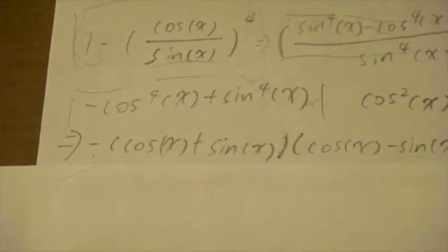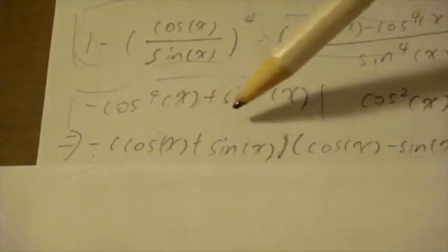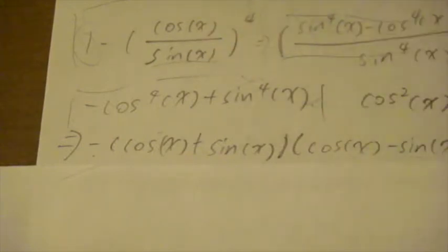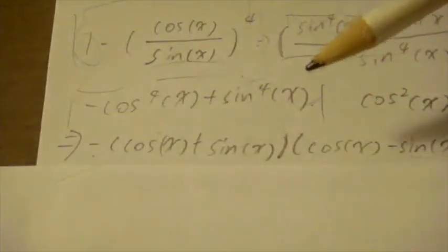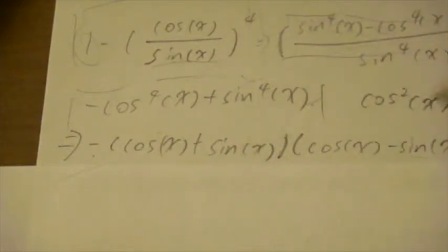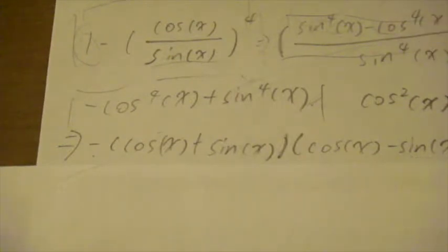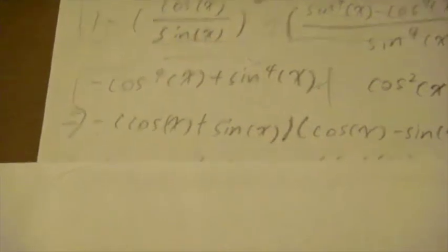To make it easier, we're going to expand this. Don't ask me why, because letting this one become this will make our life much easier. It becomes negative open parenthesis cosine x plus sine x close parenthesis, times open parenthesis cosine x minus sine x close parenthesis, times open parenthesis cosine squared x plus sine squared x close parenthesis.